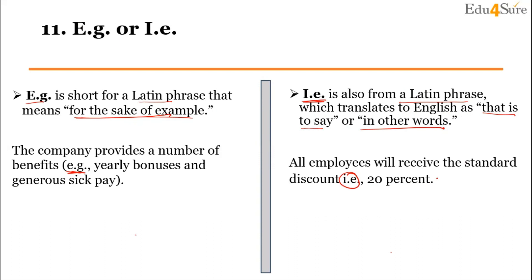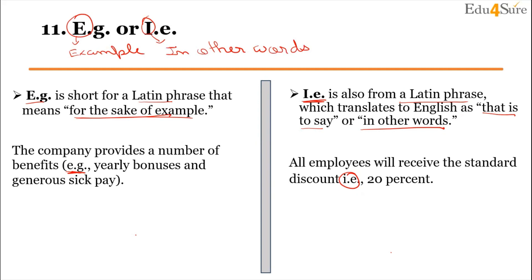Easy, isn't it? The trick is very simple. In e.g., you can associate the E with 'example'. And in i.e., you can associate the I with 'in other words'. So e.g. means 'for example', and i.e. means 'in other words'.